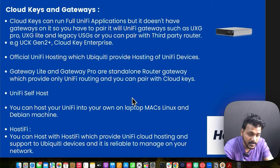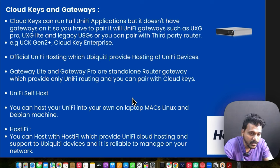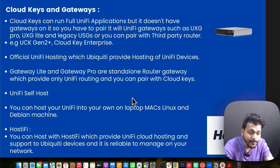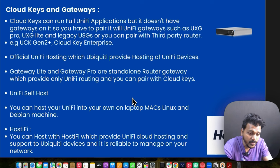The two standalone gateways — Gateway Light (UXG Light) and Gateway Pro (UXG Pro) — don't have UniFi applications on them; they function purely as routers. The Gateway Light is a small form factor router with a single WAN and LAN port providing full 1 Gbps. The UXG Pro is 1U rack-mounted with dual WAN and dual LAN ports — 1 GbE WAN, 10G SFP+ WAN, 1 GbE LAN, and 10G SFP+ LAN.